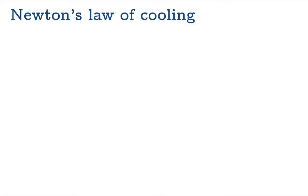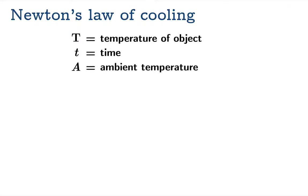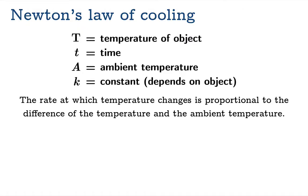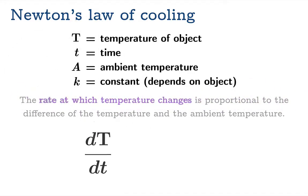Let's label some quantities. Let capital T be the temperature of an object. Little t is going to be the time. Capital A will be the ambient temperature of the thermal reservoir. Little k will be a constant that depends on the object that's cooling or heating up. Now let's quantify this. The rate at which temperature changes is going to be the derivative of temperature with respect to time, dT/dt. To say that it is proportional to something means that it is equal to a constant times the quantity, and that quantity is the difference of the temperature and the ambient temperature. Here's a differential equation which encodes Newton's law of cooling.